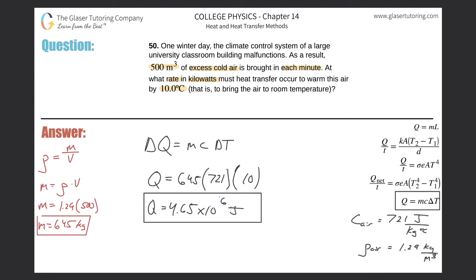So basically I can simply say that this value of joules is basically like a rate, okay? So we have 4.65 times 10 to the 6 joules per minute, right? This is the amount of heat energy necessary per minute to be supplied to warm up that air.